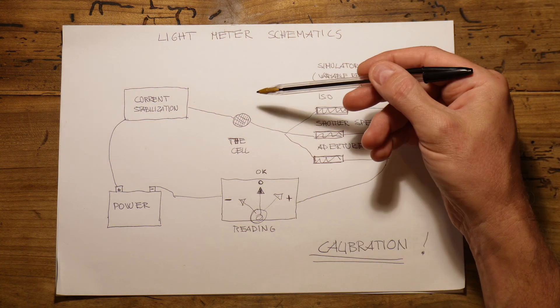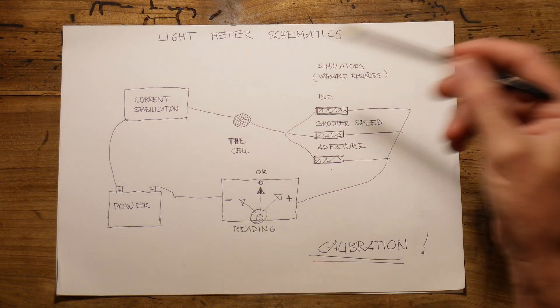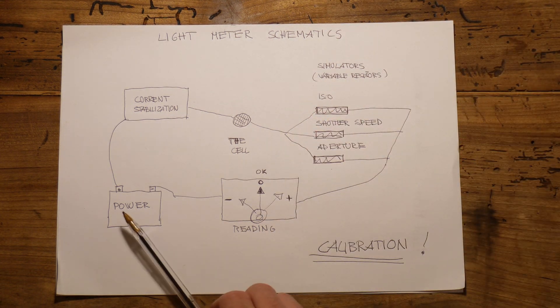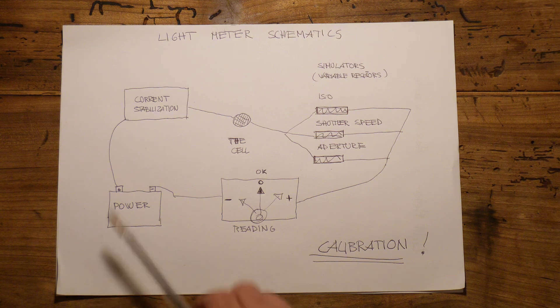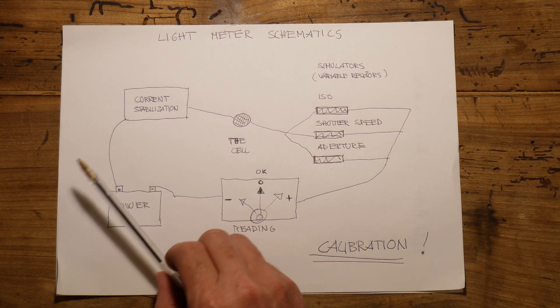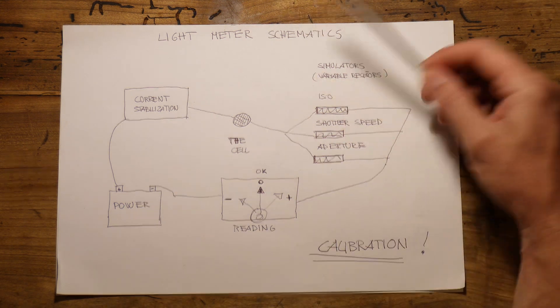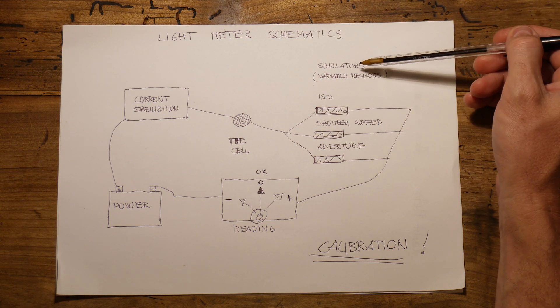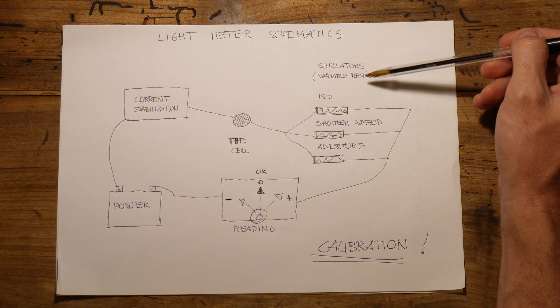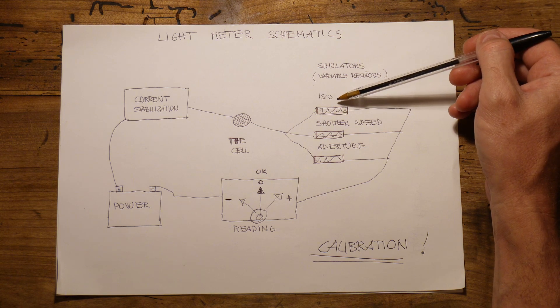The core of the meter is the metering cell. It can be made of different materials, but all have the same property: they change the current resistance according to the light that hits them. So the more light hitting the surface of the cell, the more current passing through the circuit. The circuit needs power stabilization so it will always work with the same amount of current. A very important part of a light meter are the variable resistors simulating the ISO, shutter speed, and aperture.